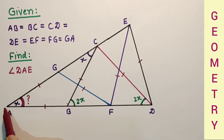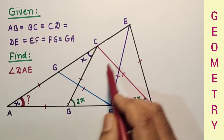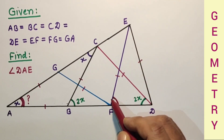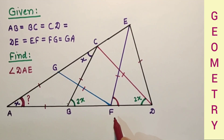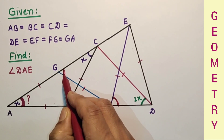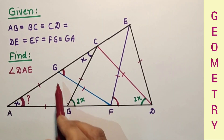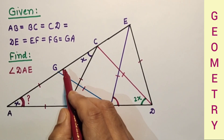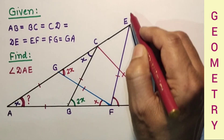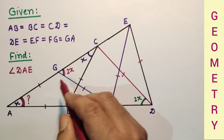Considering triangle AFE — AF extended to D — this angle is an exterior angle and will be equal to the sum of these two. Since FE is equal to FG, and GA is equal to GF, this angle is X, so this angle is also X. The sum of these two gives 2X. Since FG and FE are equal, triangle FGE is isosceles, so angle FGE equals angle FEG — this is also 2X.